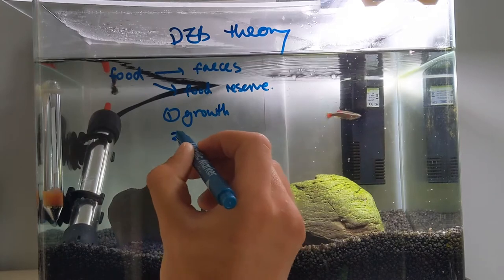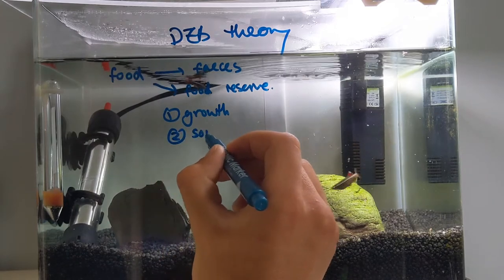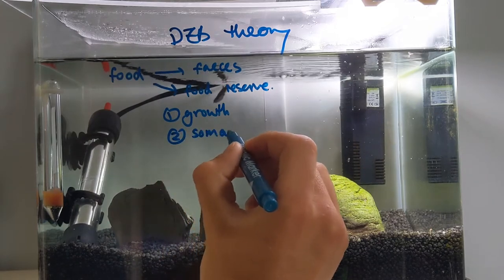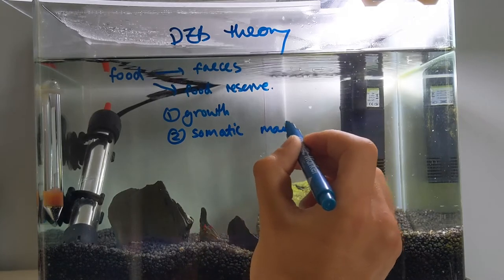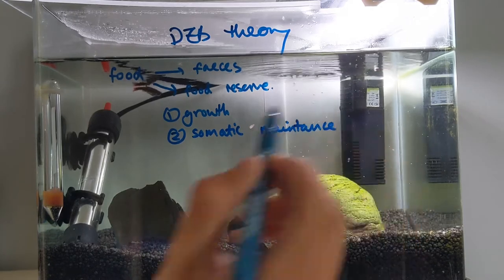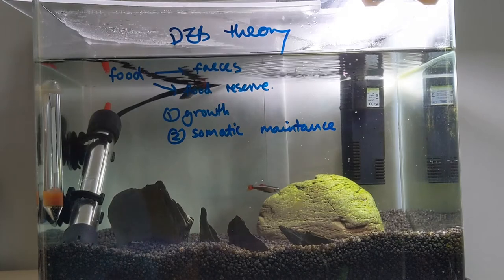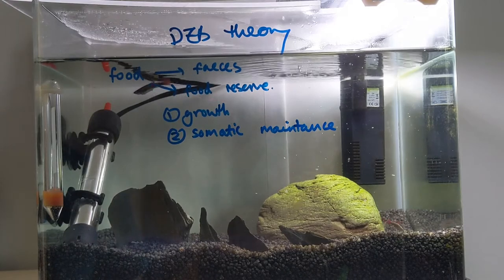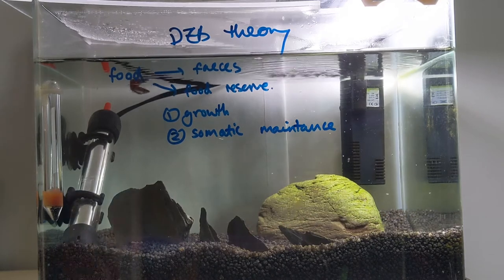The second is somatic maintenance. Somatic maintenance is basically the turnover of structural mass — for example, proteins. These two areas, growth and somatic maintenance, are the priority.